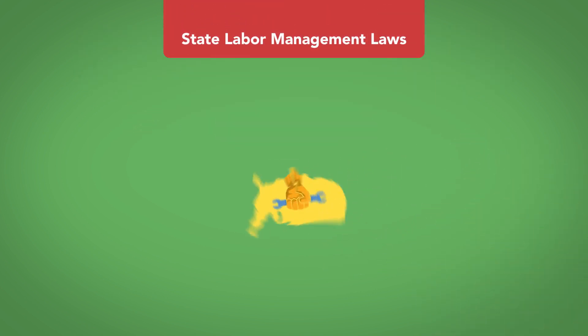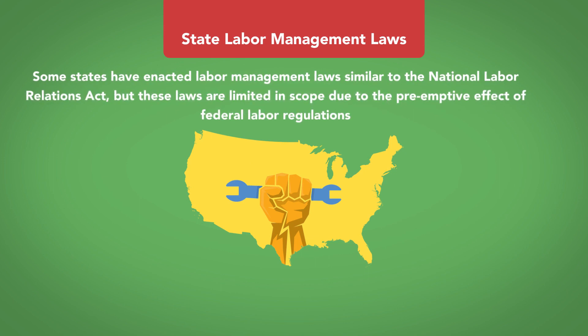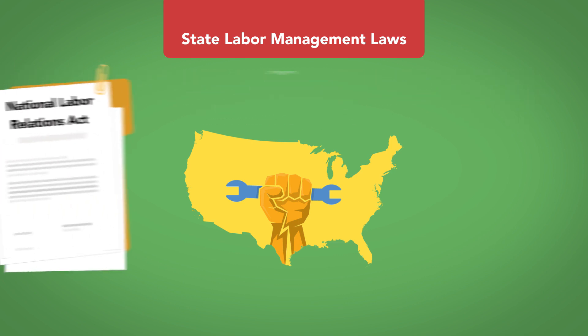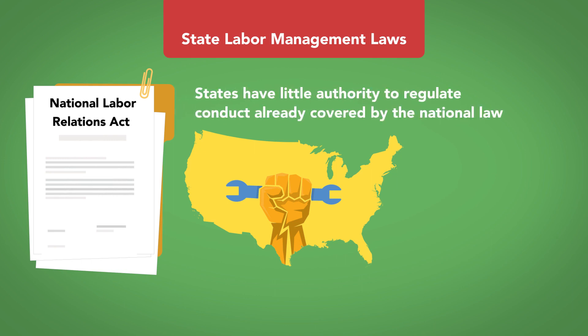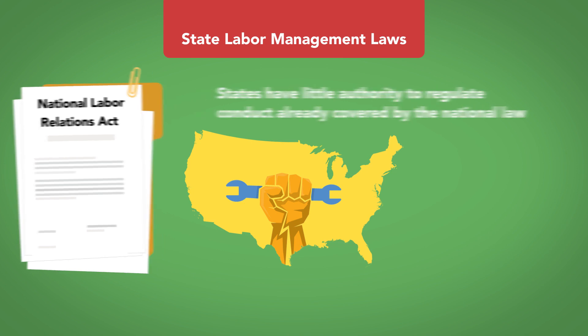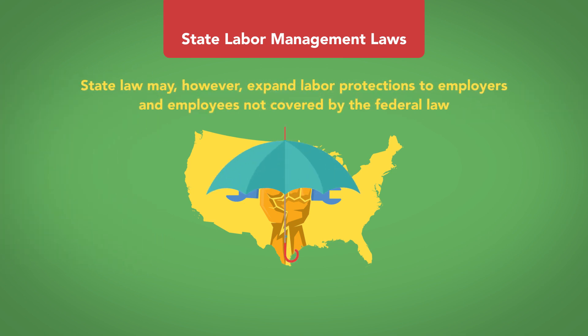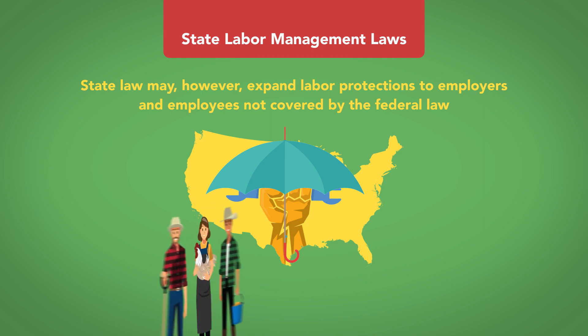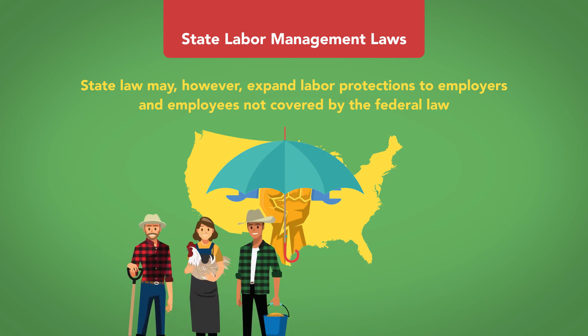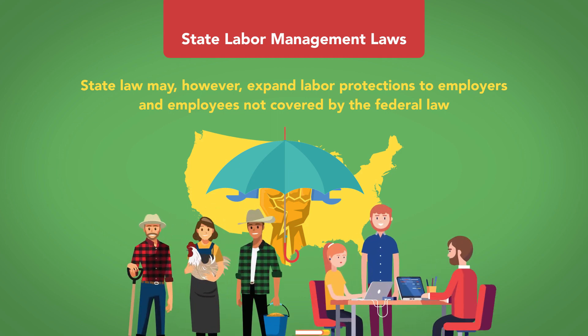State Labor Management Laws. Some states have enacted labor management laws similar to the National Labor Relations Act, but these laws are limited in scope due to the preemptive effect of federal labor regulations. The NLRA is quite broad, and states have little authority to regulate conduct already covered by the national law. State law may, however, expand labor protections to employers and employees not covered by the federal law, such as agricultural workers or certain exempt small businesses.